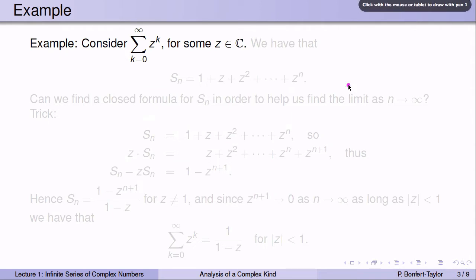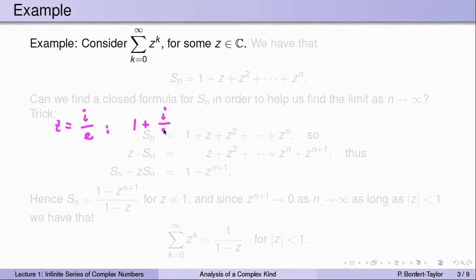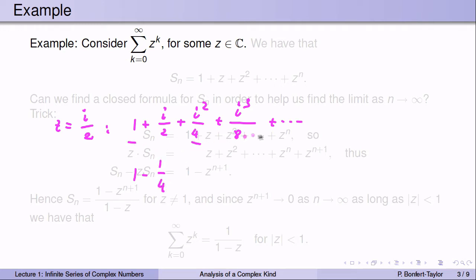Let's start with an example. Consider the series of z to the k, for some z. For example, if z equals i over 2, then the series would be: for k equals 0 you get 1, for k equals 1 you get i over 2, for k equals 2 you get i squared over 4, then i cubed over 8, and so forth.